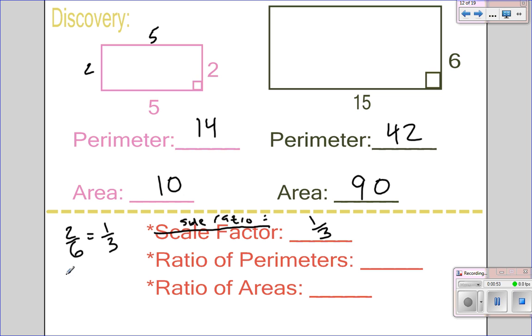So, the perimeter ratio is 14 over 42, which 14 goes into both of those, so it reduces down to, oh, look at that, 1 over 3 again. So, what do you notice about the side ratio and the ratio of the perimeters? Well, they are the same.